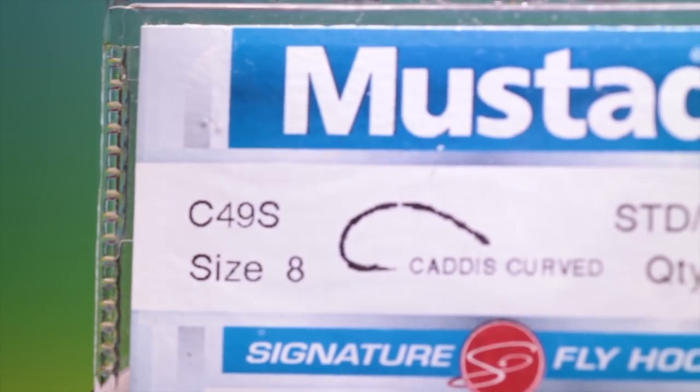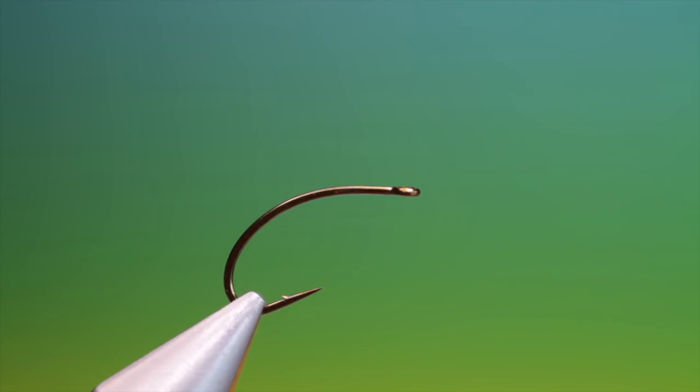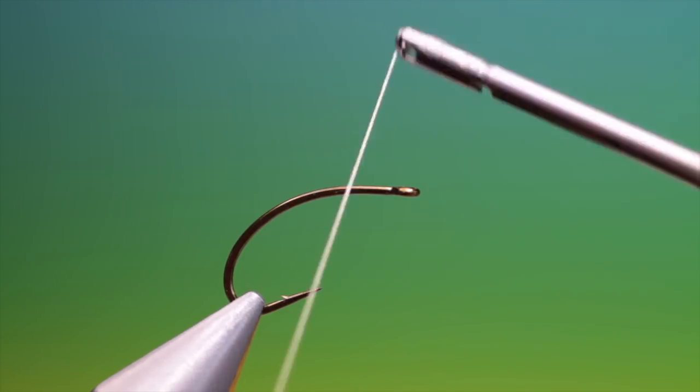We'll start with the Mustard C49 size 8 curved caddis hook. This is Antron caddis larva.